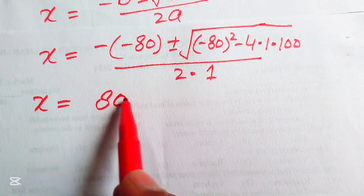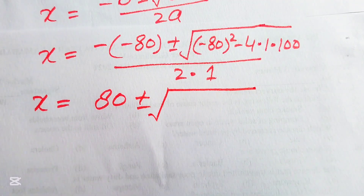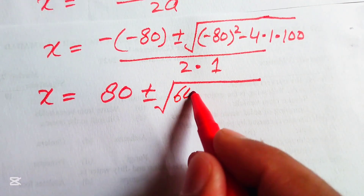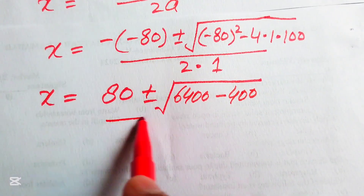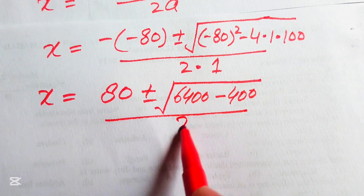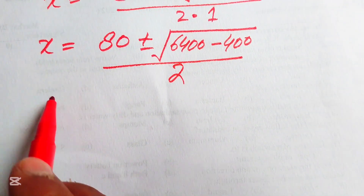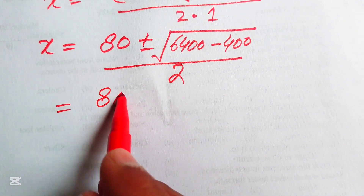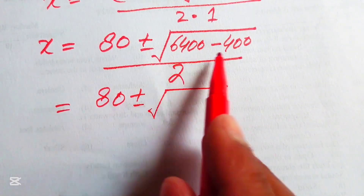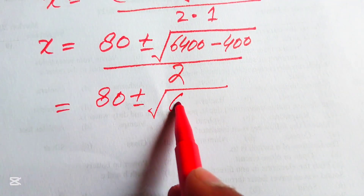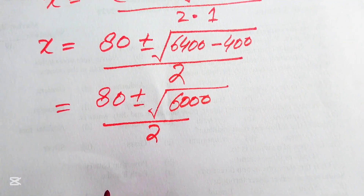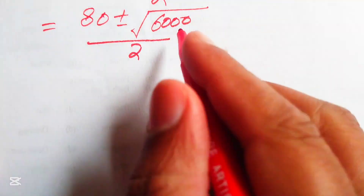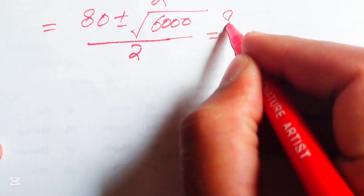Simplifying: minus times minus gives plus 80, plus or minus the square root of 80 squared minus 4 times 100, divided by 2. So 80 squared equals 6400, and 4 times 100 equals 400, divided by 2 times 1 equals 2. In the next step: 6400 minus 400 equals 6000, divided by 2.